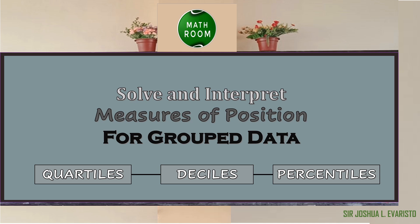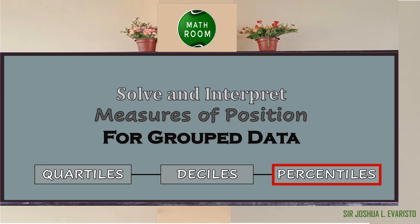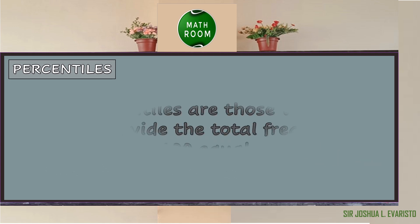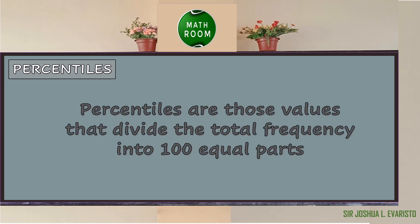In our previous lesson, we learned how to solve and interpret quartiles and deciles for grouped data. This time we will discuss how to solve and interpret percentiles for grouped data. But before that, let us recall: what are percentiles? Percentiles are those values that divide the total frequency into 100 equal parts.